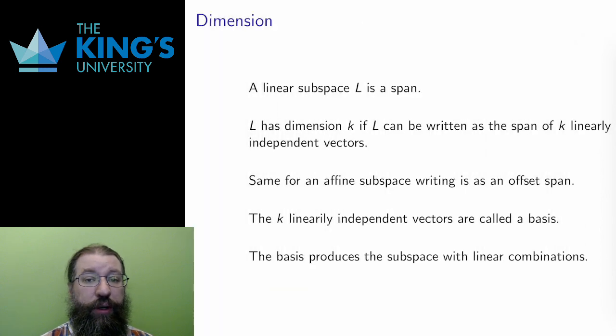A linear subspace is a point, a line, a plane, or something similar in higher dimensions. It makes sense to talk about the dimension of a linear subspace. A point should have dimension 0, a line dimension 1, a plane dimension 2, and so on. Using spans, how can I understand this? I can use the idea of linear independence.